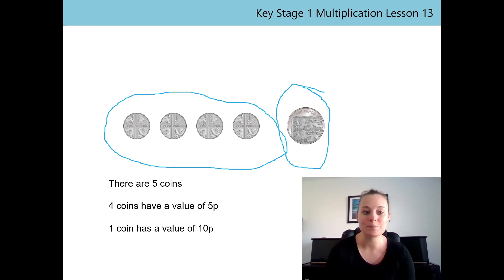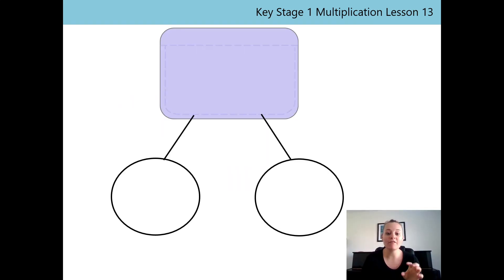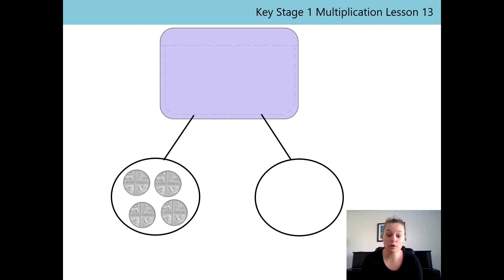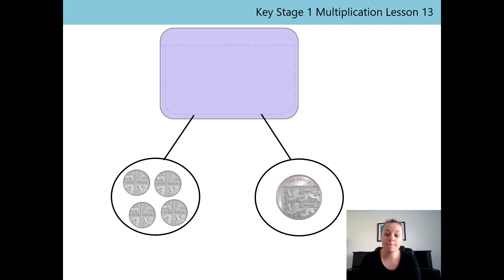Now we have grouped our coins together, I'm going to use the part-part-whole model. It's really important to remember that the purse is the whole — so the amount of money that we have in the purse is the whole. So in one part I'm going to put in the group of 5P coins, and in the other part I'm going to put in the 10P coin.